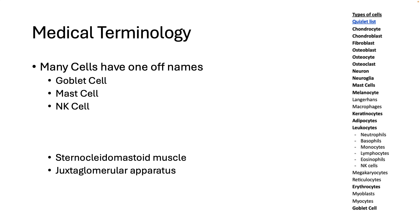If you look at these two words, students often freak out because they're really long and they don't know how to pronounce them. But if you pull them apart and use the prefix and suffix to figure out what they're talking about, it can help. 'Sternocleidomastoid' is a muscle in the neck. Pulling it apart: sterno is the sternum, kleido is the clavicle, and mastoid refers to the mastoid process on the skull. Putting them together — sternum, clavicle, skull — you know exactly where this muscle is.